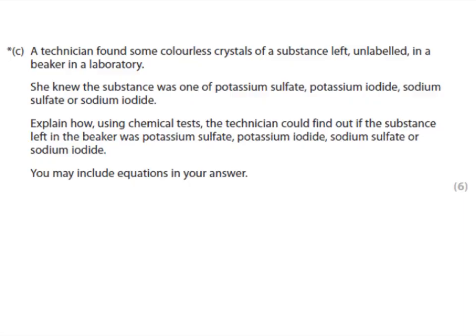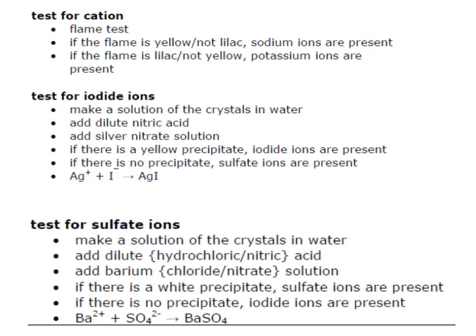A question taken directly from the C3 examinations may look something like this. A technician has found some colourless crystals of a substance left unlabelled. We know that it could either be potassium sulfate, potassium iodide, sodium sulfate or sodium iodide. Explain how, using chemical tests, we could find out which of these solutions it could be. It's important to note that all four of these solutions are colourless solutions. First of all, we have the test for the cation, which can be done via a flame test. If the flame is yellow and not lilac, then we have sodium ions; however, if it is lilac and therefore not yellow, we have potassium ions.